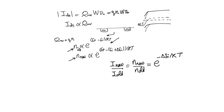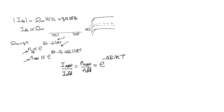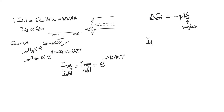The first step in transforming this into a useful relationship is to realize that delta E_I is related to the potential developed at the surface of the substrate through the electron charge q. So delta E_I equals minus q times V_S, where S stands for surface — not source. Therefore, IDS_new equals IDS_old multiplied by e to the power of delta V_S divided by (kT/q).